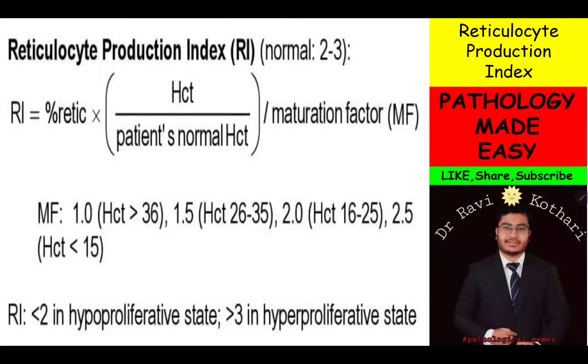Hello friends, I hope you all are doing great. In today's video, I am going to discuss the reticulocyte production index, which is also known as RI or RPI. Normal is 2 to 3.